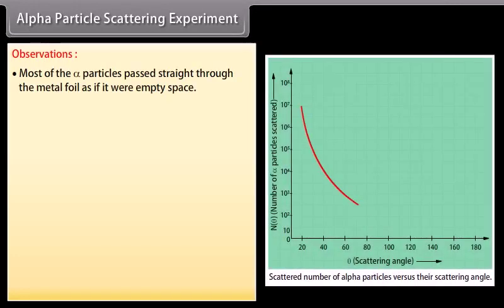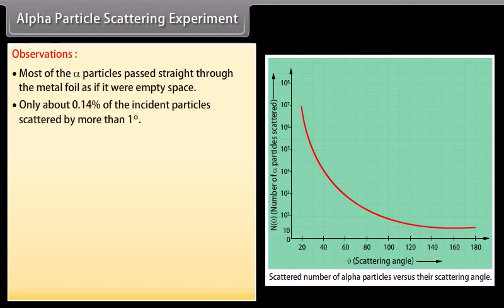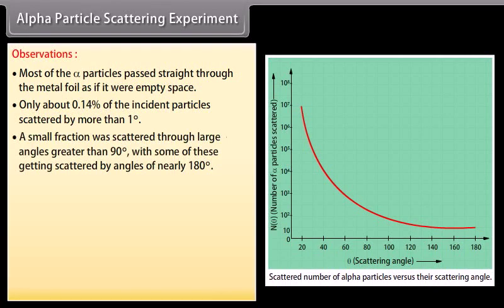Observations: Most of the alpha particles passed straight through the metal foil as if it were empty space. Only about 0.14% of the incident particles scattered by more than 1 degree. Small fractions were scattered through large angles greater than 90 degrees, with some of these getting scattered by angles of nearly 180 degrees.